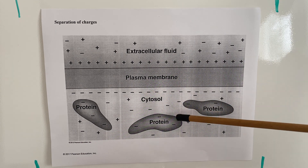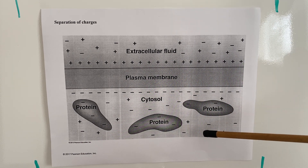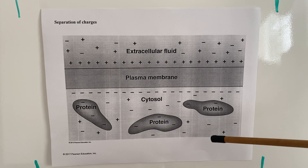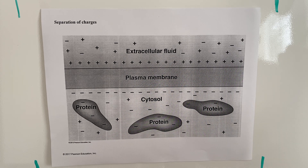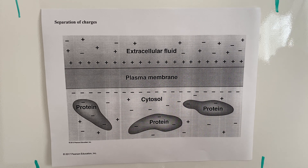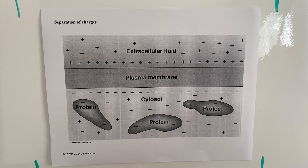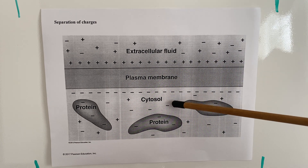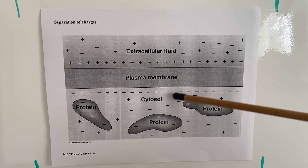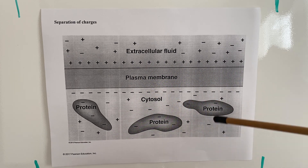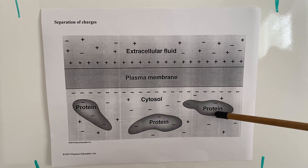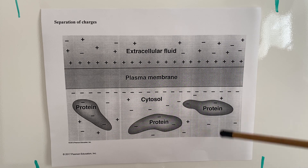This net charge of negative 70 inside of the axon is called the resting membrane potential. The resting membrane potential refers to when a neuron is at rest — it is not actively producing any electrical or chemical signaling. Its resting potential is negative 70 millivolts on the inside, and that is due to the presence of these charged ions as well as the negatively charged proteins.